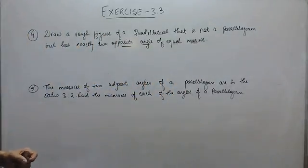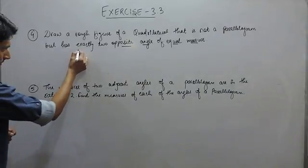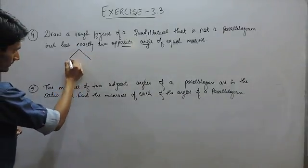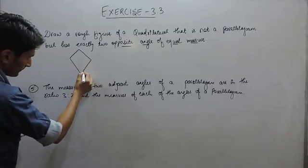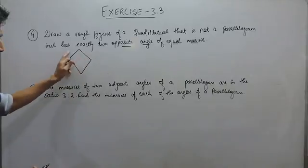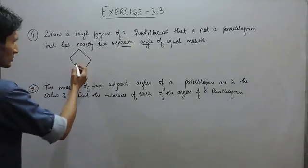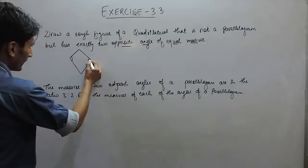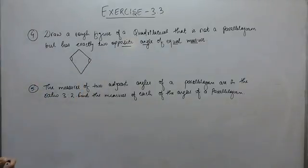We know that a quadrilateral known as a kite. A kite is a quadrilateral having four sides and its two opposite angles are of equal measures.